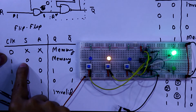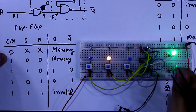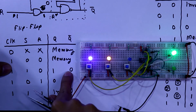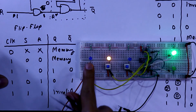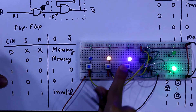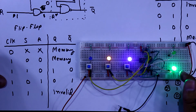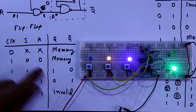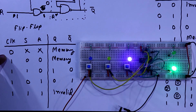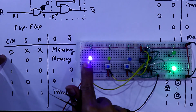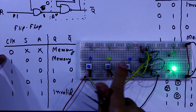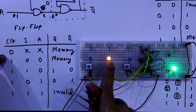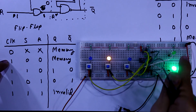If clock is one with S and R both zero, it is in the memory state. S is one: Q is one and Q-bar is zero. Clock one and if R is one — now Q-bar is one and Q is zero, as you can see. If clock is zero and you change the input, the output will not change. When clock is one and I press S, it becomes Q.